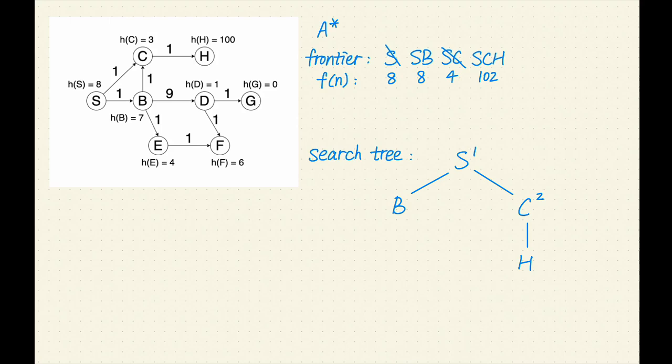Next, SB has the lowest F value of 8. Let's remove SB from the frontier. B is not a goal, let's expand it. B has three successors: C, D, and E. Let's add SBC, SBD, and SBE to the frontier. The F values are 5, 11, and 6.